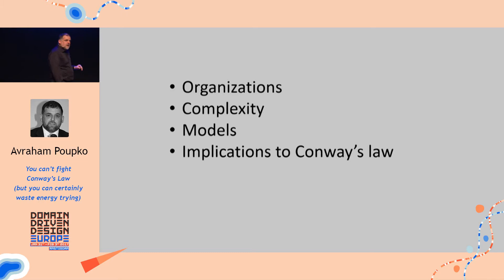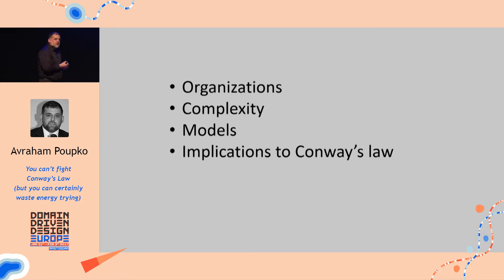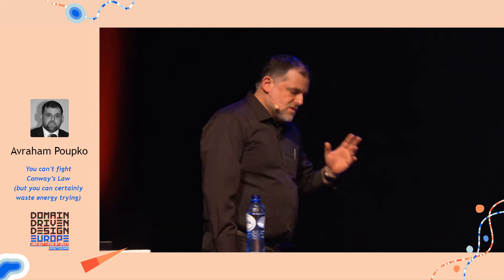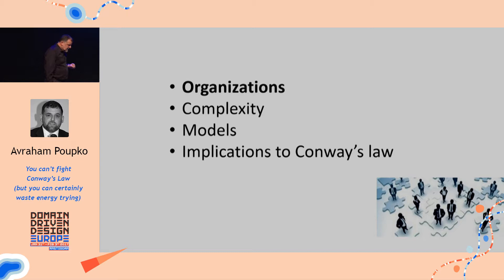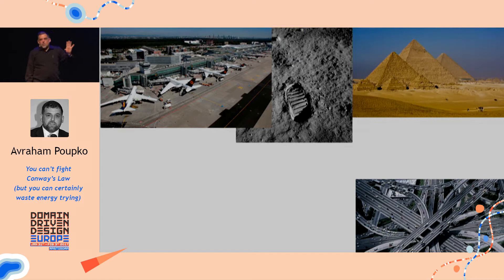What I'd like to do today is describe why Conway's Law is true and why it has to be true. Once we understand that, maybe we can learn to live in a world governed by Conway's Law and do better. I want to talk about four things: organizations and why we need them, complexity, a word or two about models, and then I'll put it all together to describe the implications on Conway's Law. So let's start with organizations — why do we need them? In order to describe that, let's go back to our very early roots.